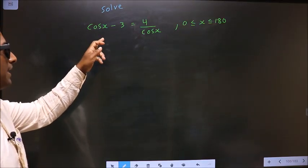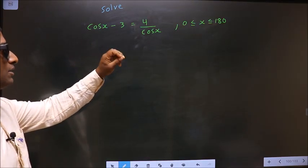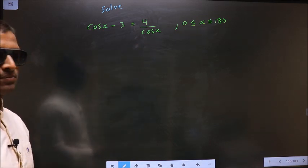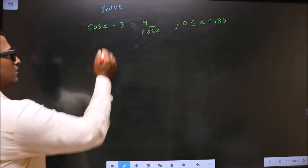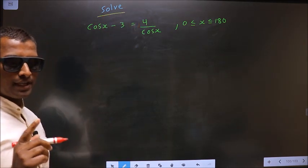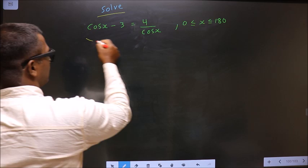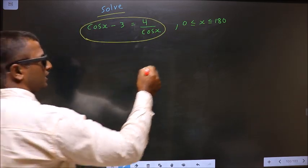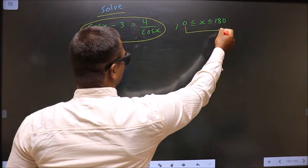Solve cos x minus 3 equal to 4 by cos x, where x lies in the interval 0 to 180. Here they told you to solve, so you should find the values for x satisfying this equation, and also it should lie in this interval 0 to 180.